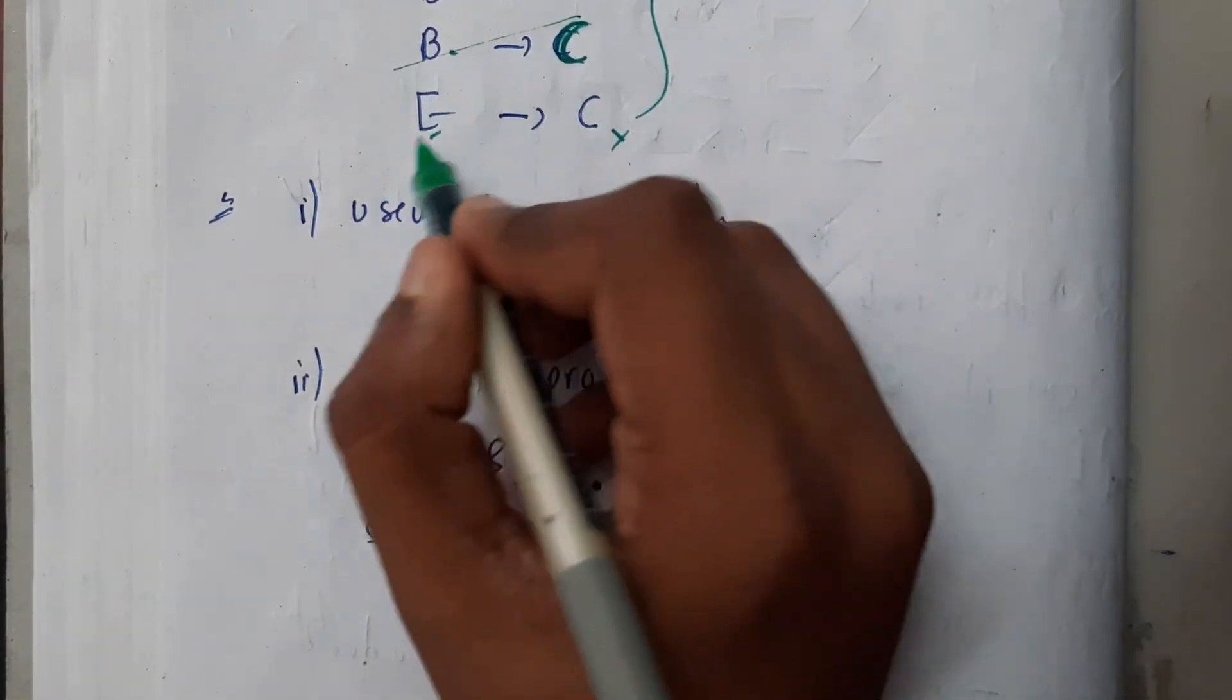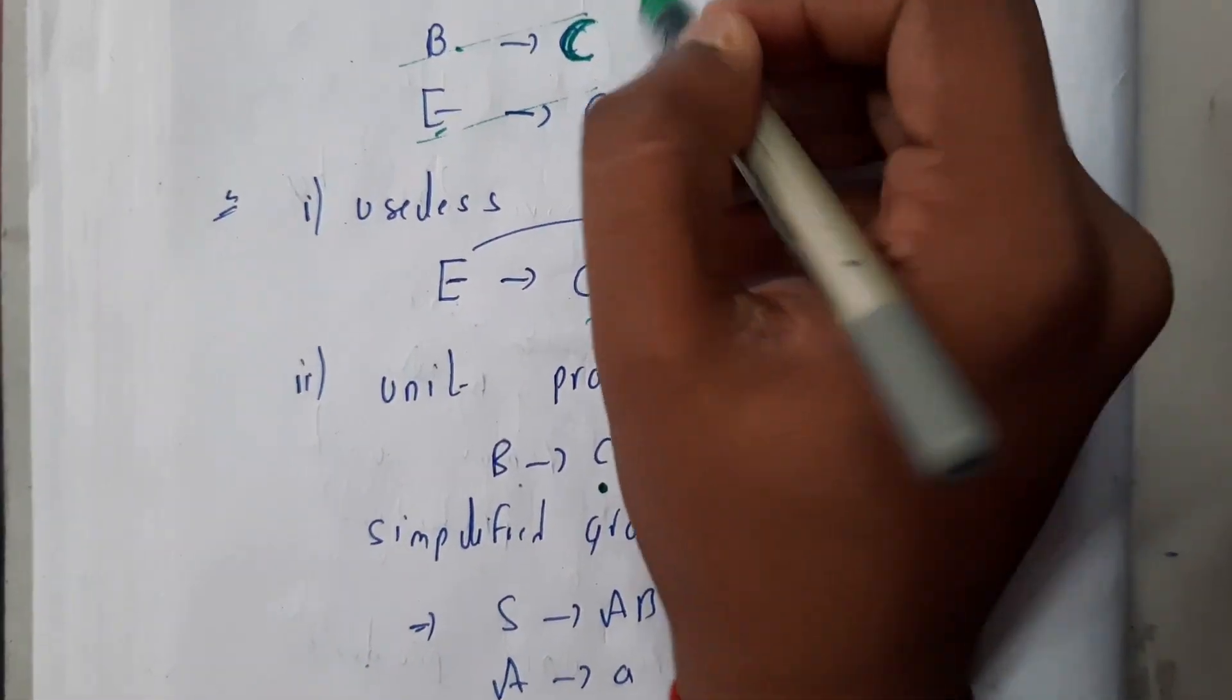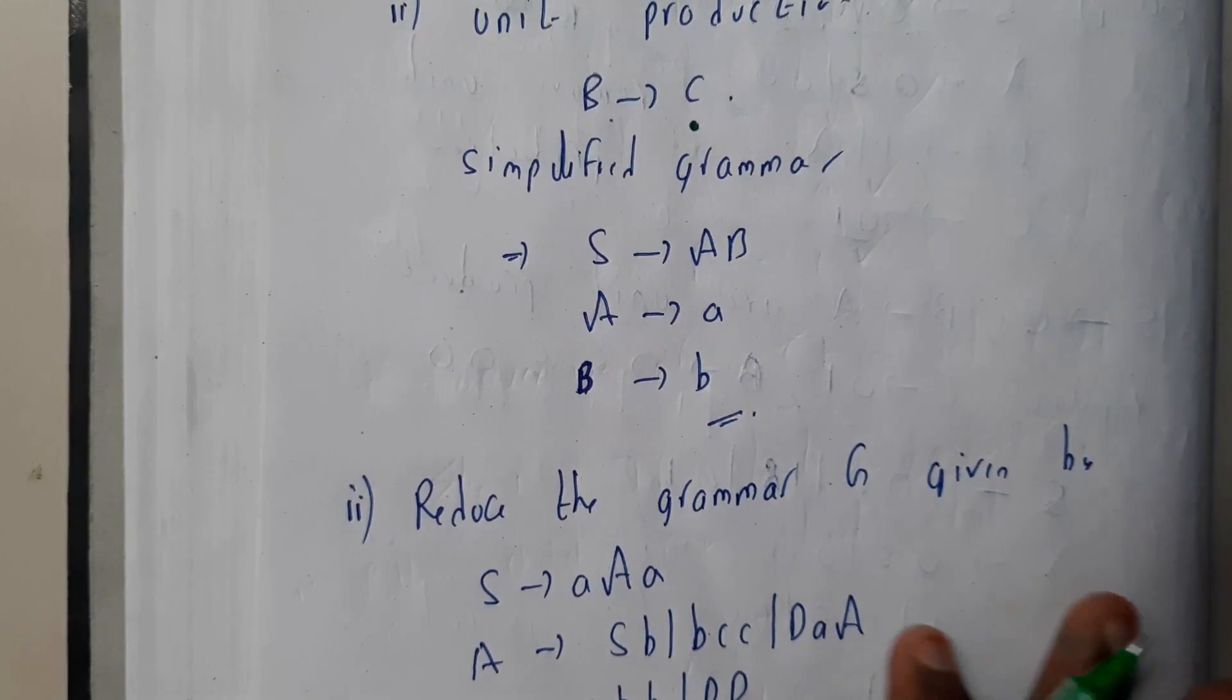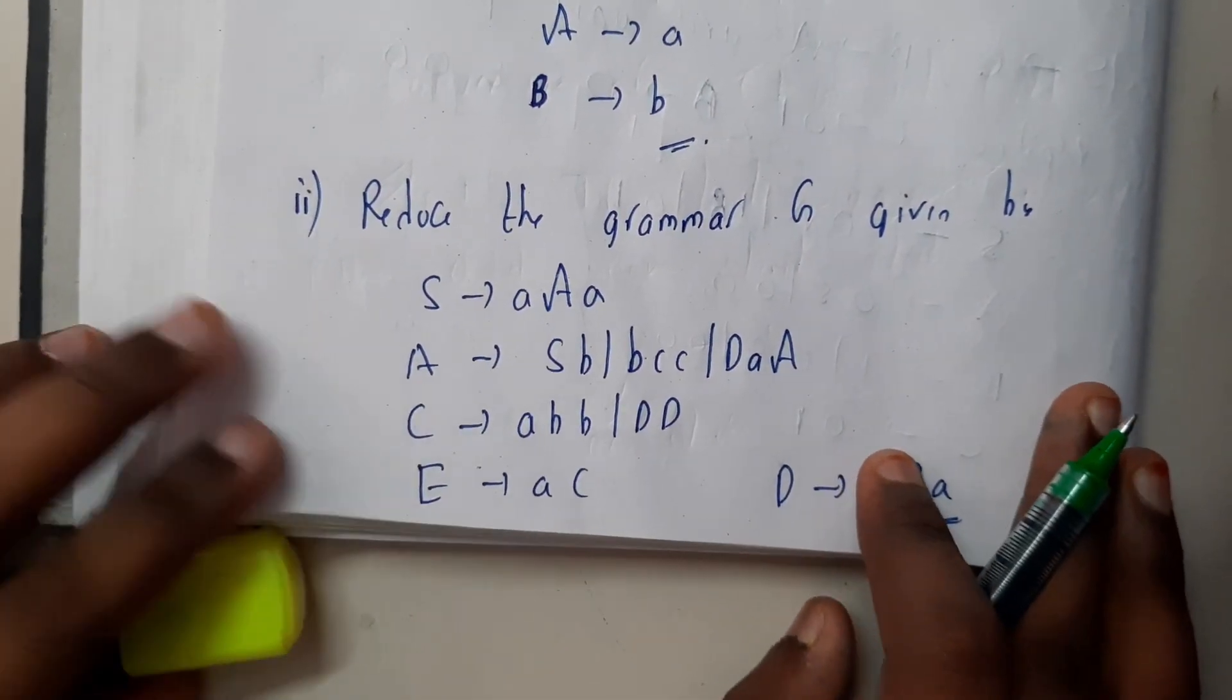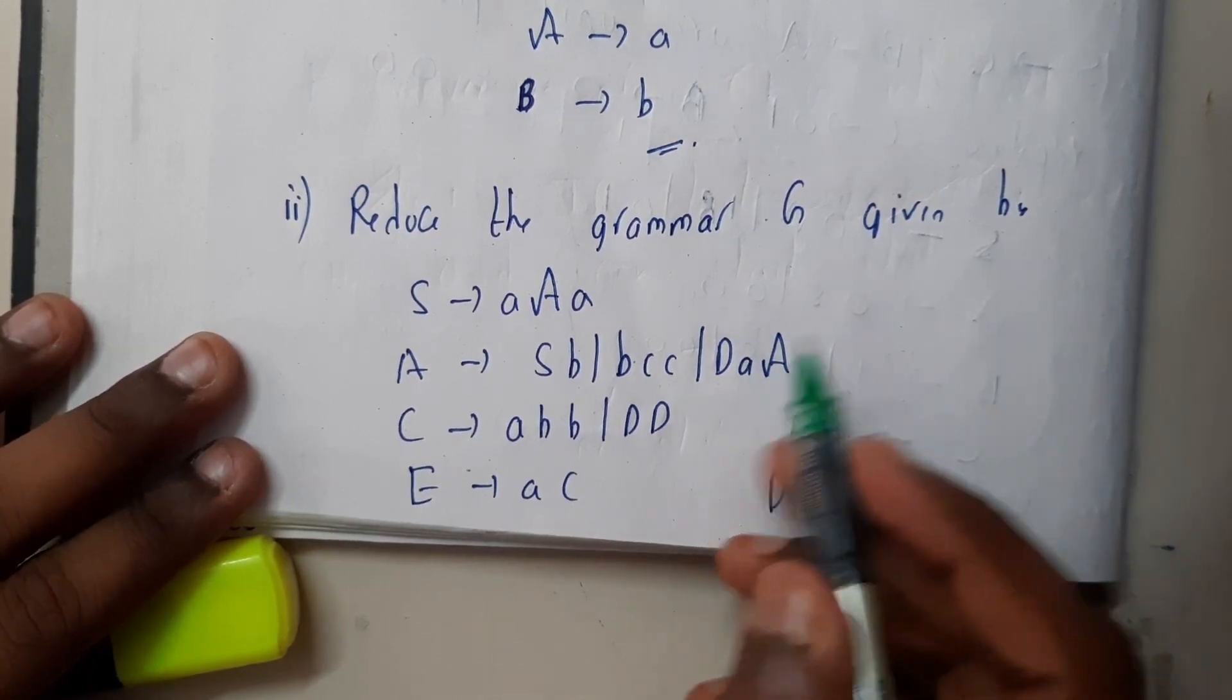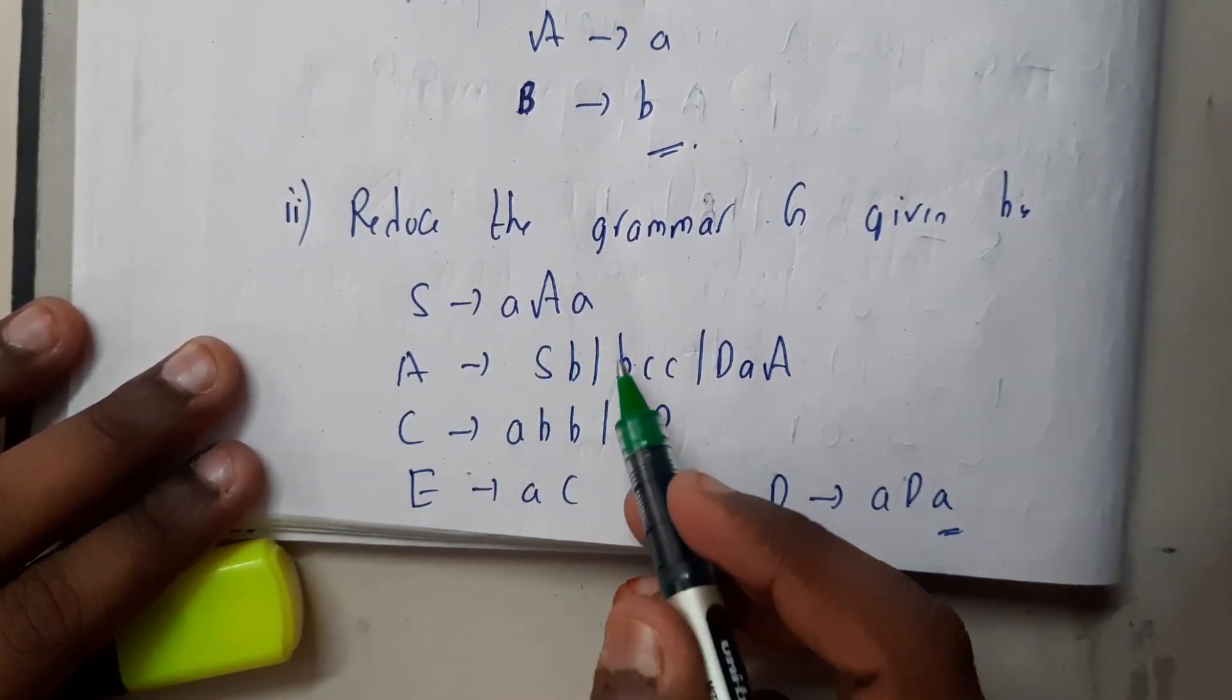Basically, C is not having any value, so it is also a useless symbol. We can remove this also in a single step. So the first three lines will be our simplified grammar. Fine. Okay, so reduce the grammar G given: